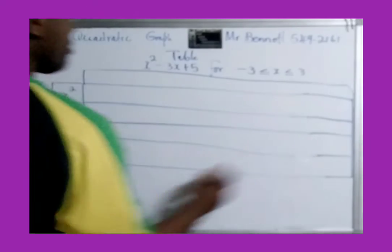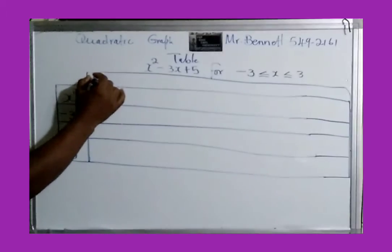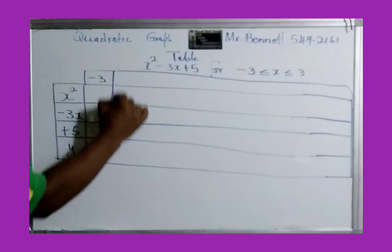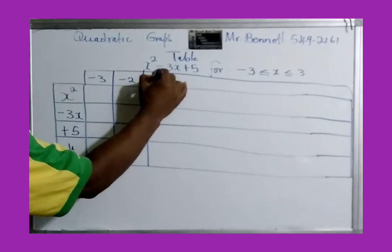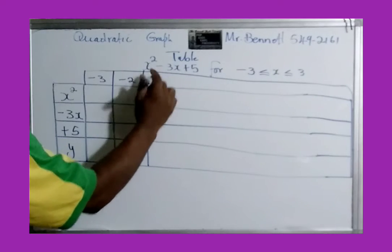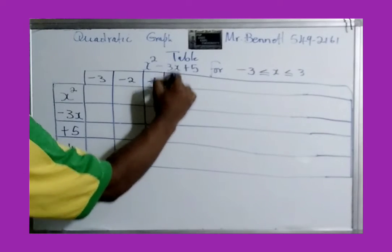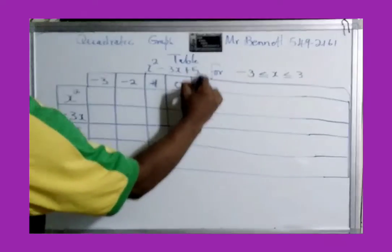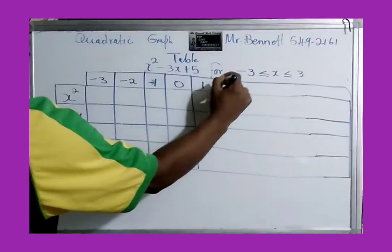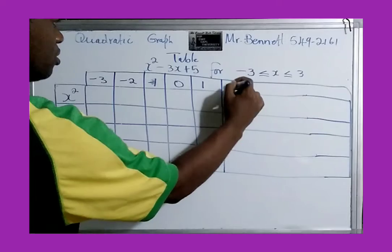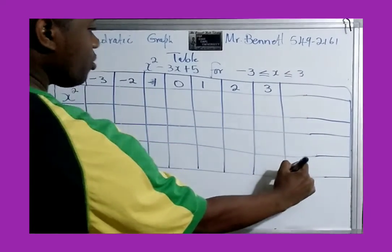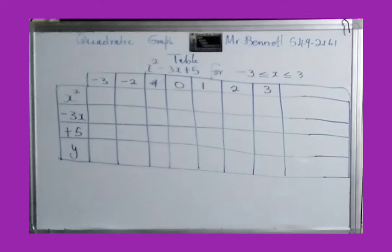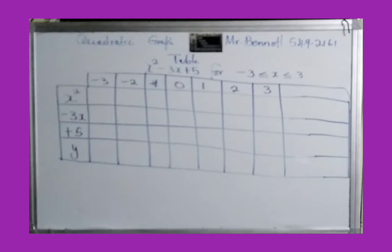The x values go here. First x must be negative 3, negative 2, all the way to positive 3. Remember to include zero, as that's the y-intercept. As I say, we stop at 3. Normally CSEC will give you the domain, so you just work with whatever domain they give you.